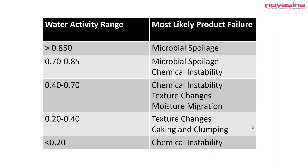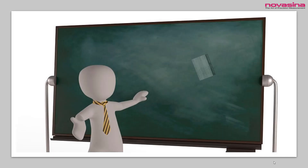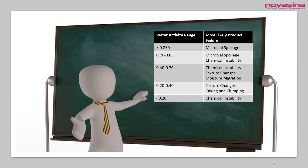Water activity can be more than just a number on the screen. Considering all the critical stability factors it impacts, it should be the most important product release specification for shelf-stable products. We've only briefly introduced you to the broad utility of water activity here, but Novacena is publishing additional educational videos — please continue to visit the web pages of either Novacena or your local distributor to view additional videos in the 'What to Do with Water Activity' series.